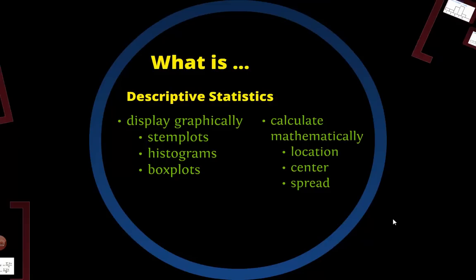We have two things we can do with this. We can either display them graphically in forms of stem plots, histograms, and box plots, or we can calculate it mathematically, which will give us information about the location of the data, the center of the data, and the spread, or how wide the data is dispersed.